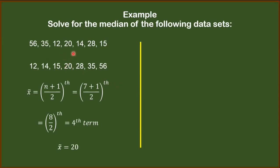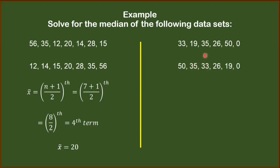Let's try the same procedure with this example. We have 33, 19, 35, 26, 50, and 0. For this example, let's arrange the dataset in descending order, meaning we start with the highest value going to the lowest: 50, 35, 33, 26, 19, and 0. Note that if you arrange the data in ascending order instead, the median you compute should be equal to the median computed using descending order.